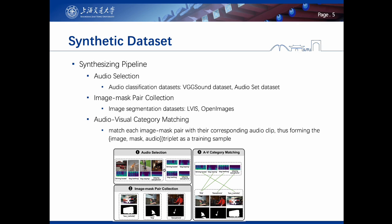First, we select audios using instance-level class labels from a publicly released audio dataset. Next, based on the categories of selected audio clips, we pick categorized image and segmentation mask pairs for objects in the target categories. Finally, we match each image-mask pair with its corresponding audio clip, forming the image, mask, audio triplet as a training sample for the AVS task.